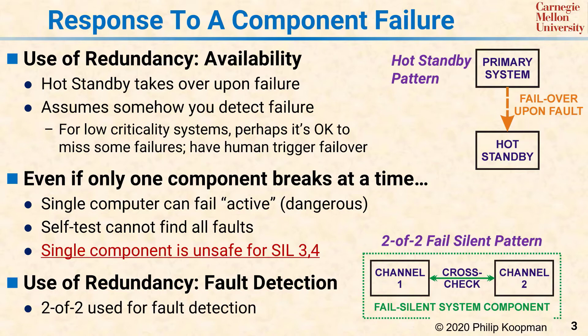The two channels cooperate for producing system outputs. If either channel suffers a fault, the cross-check will detect a mismatch between the internal state or the outputs, and the channels will mutually perform a safety shutdown.